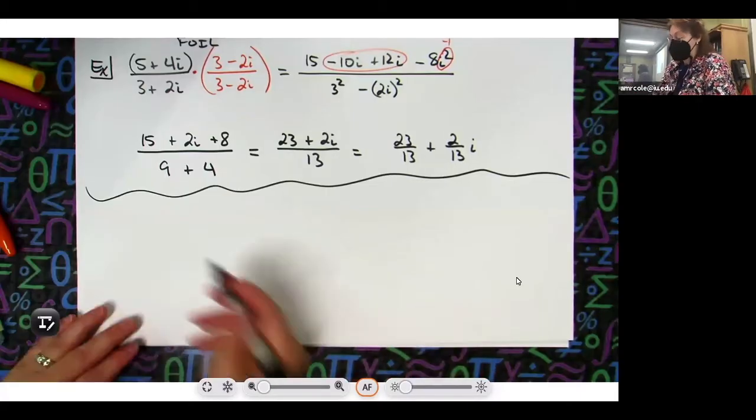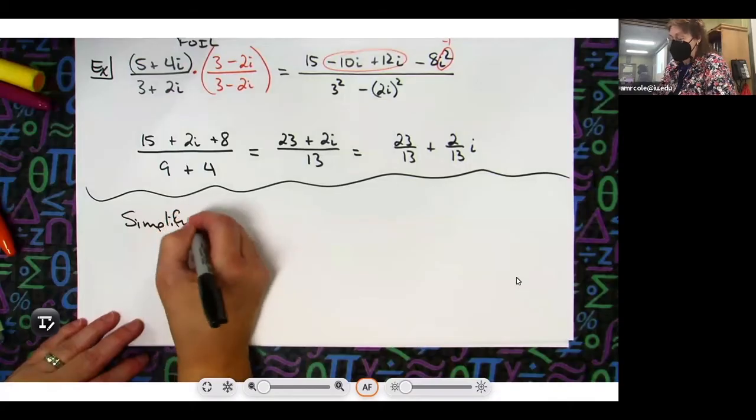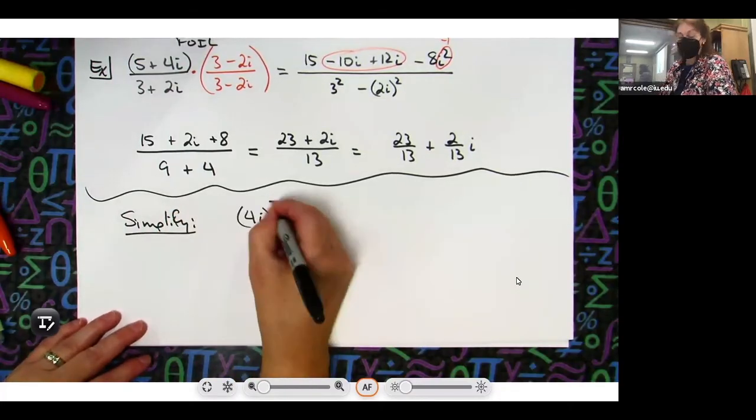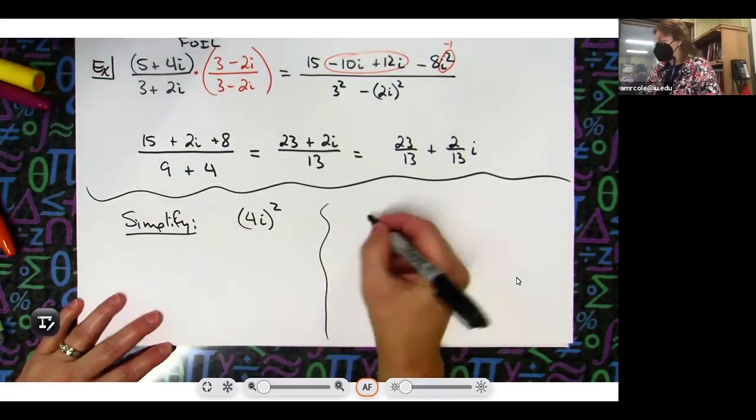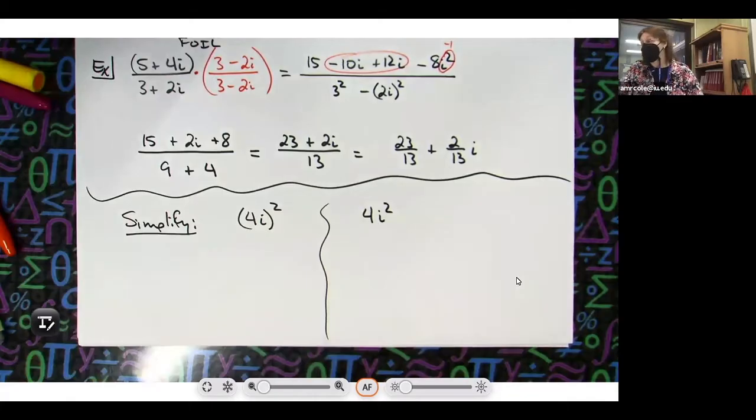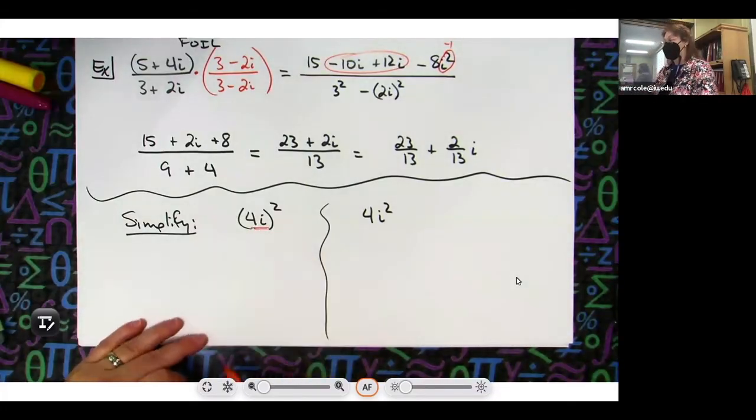Let's just say I'm trying to simplify and let's say I've got a 4i in a set of parentheses and I'm trying to compare that with a 4i squared. Those two are not the same thing. One has a set of parentheses, one doesn't. That set of parentheses is saying that's my entire base and that's what's getting squared. This one, the only thing getting squared is the i, that 4 is left alone.